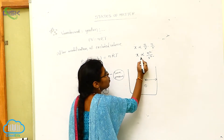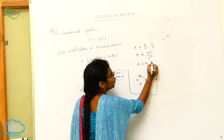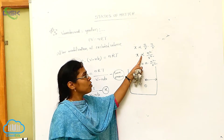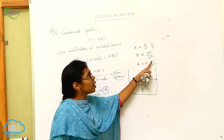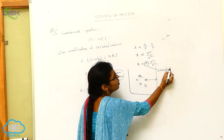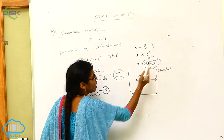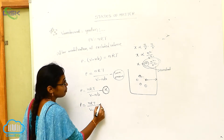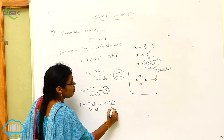On removal of the proportionality symbol, we can write X is equal to a into N squared by V squared. Here 'a' is also called a constant. So in the place of X, we put this equation: P is equal to NRT by V minus NB minus a into N squared by V squared.